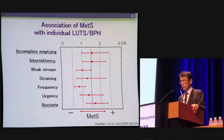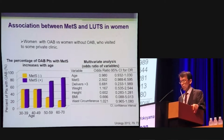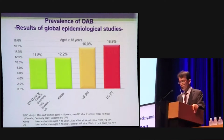This slide shows the association of individual symptoms with metabolic syndrome. Metabolic syndrome was found to be associated with mild and severe incomplete emptying, intermittency, and nocturia. In women as well, the percentage of OAB patients with metabolic syndrome increased with age, and the odds ratio of metabolic syndrome was the highest among variables by multivariate analysis. The prevalence of OAB is approximately the same in countries around the world — there is no difference between Asian countries, Korea, the US, and European countries.